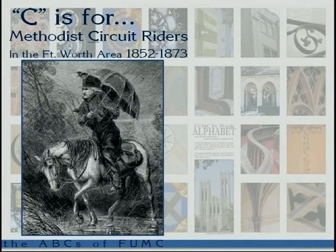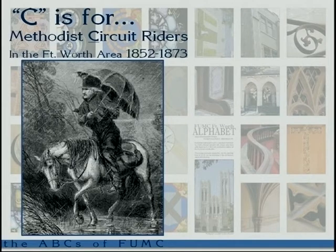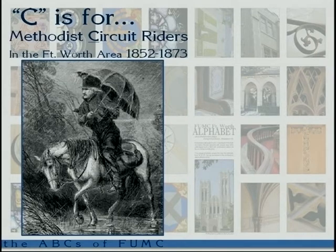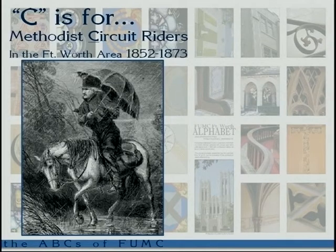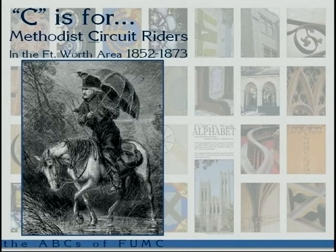C is for circuit riders. When the Methodist Church came to this area, Fort Worth was still a fort — it was a fort from 1849 to 1853. In 1852 the first circuit riders started coming to the Fort Worth area, and for the next 20 years there were 14 different circuit riders assigned here. It was originally the Red Oak Conference and the Alton Mission. Circuit riders' lives were very hard — they had to live out in the wilderness and move from community to community.